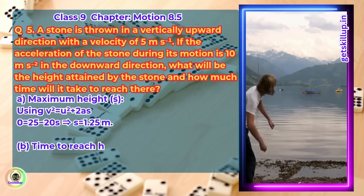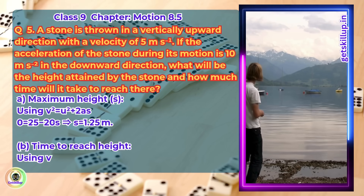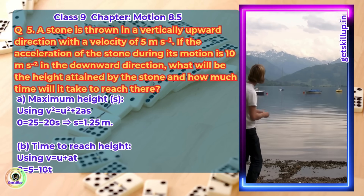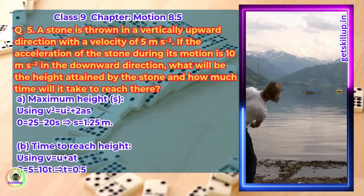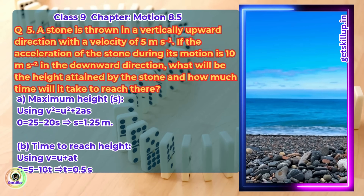Time to reach height: using v equals u plus at, 0 equals 5 minus 10t, which gives t equals 0.5 seconds.